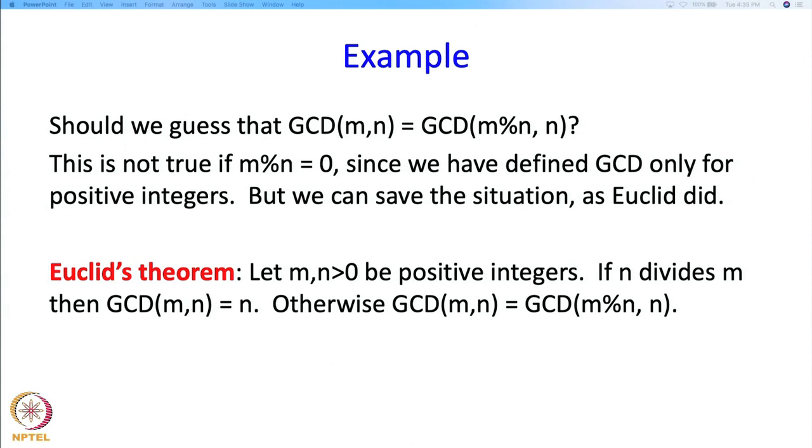So we will write a statement which we could call Euclid's theorem which is that let m and n be positive integers, they are greater than 0. If n divides m then GCD of m and n is n. So if n divides m then clearly the largest number dividing both m and n must be n. But if n does not divide m, then GCD of m and n must be equal to GCD of m mod n, n.